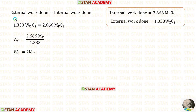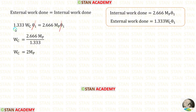Now let us equate the external work done and the internal work done. We can eliminate theta1, and taking 1.333 to the denominator on the right side, we get the collapse load wc equal to 2mb.